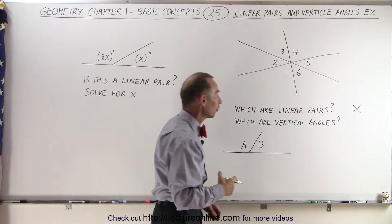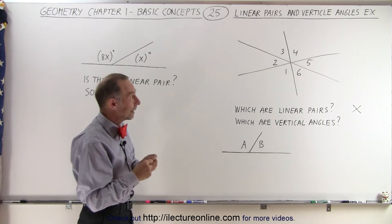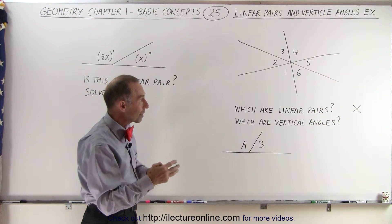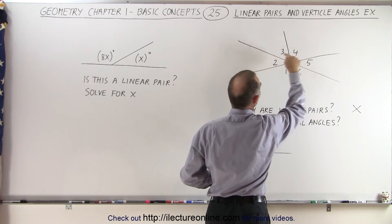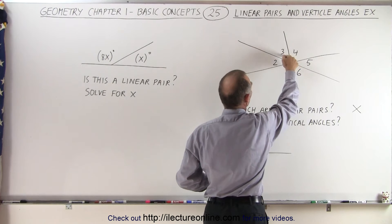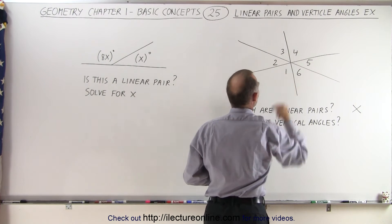However, are there vertical angles? And the answer is yes there are. There's three pairs of vertical angles. Every time you look at two opposite angles like this, two and five would be considered vertical angles, three and six, and one and four.